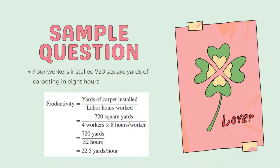Sample question: four workers installed 720 square yards of carpeting in eight hours. Productivity equals yards of carpet installed over labor hours. This gives us 720 square yards over four workers times eight hours per worker — that is 720 yards over 32 hours — giving us 22.5 yards per hour as the productivity.